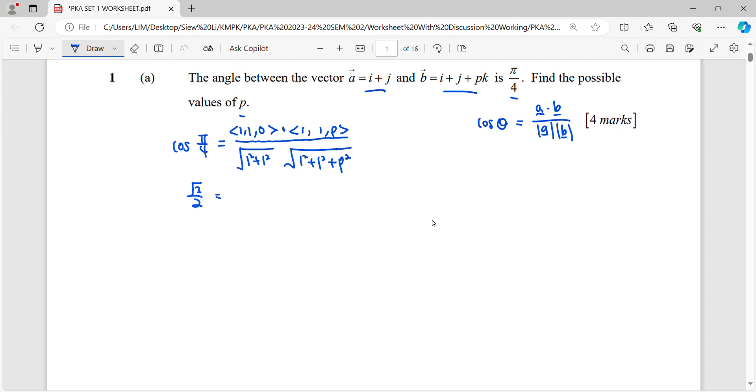So what do you have in your dot product? 1 dot 1, 1, plus 1 dot 1, 0 dot p, 0.